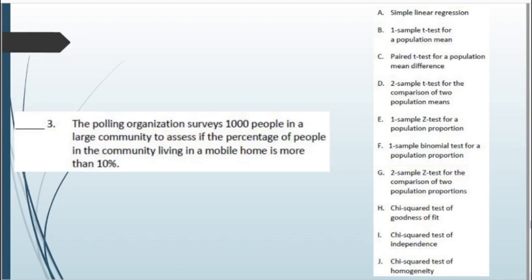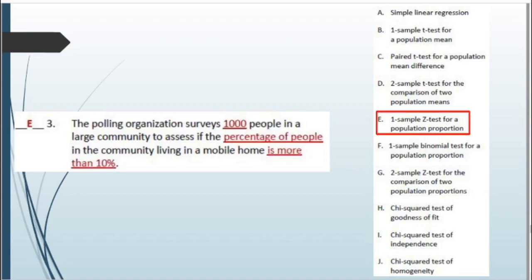Scenario 3: A polling organization surveys 1,000 people in a large community to assess if the percentage of people living in a mobile home is more than 10%. This is a one-sample z-test for one population proportion. We have one sample and we're testing whether a proportion exceeds a fixed value of 10%.